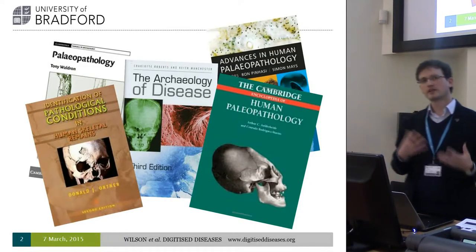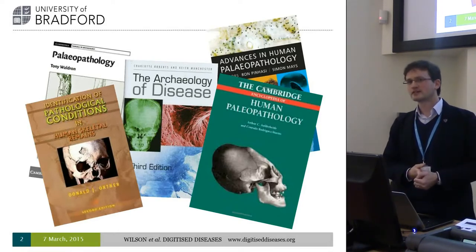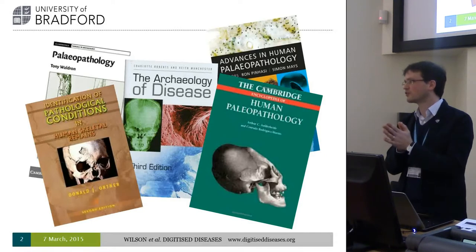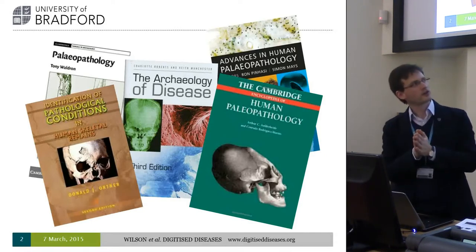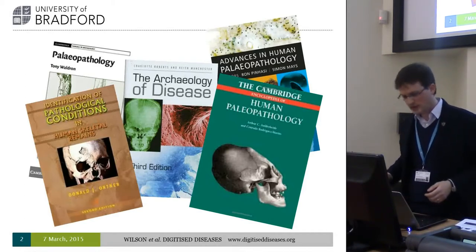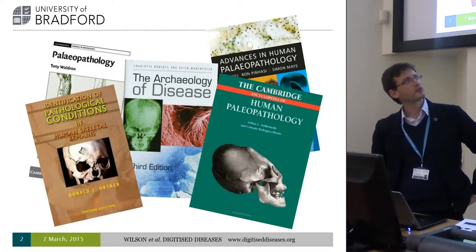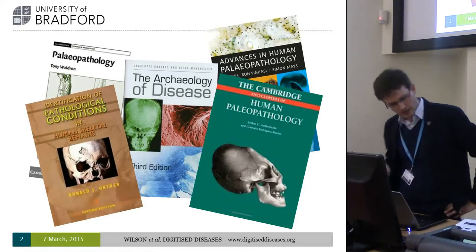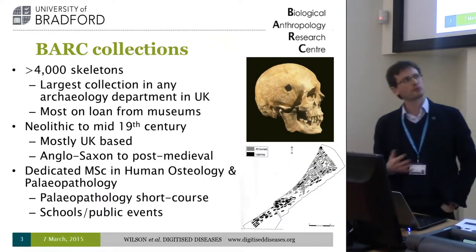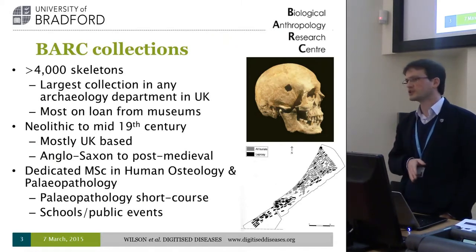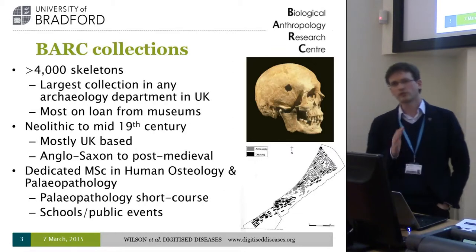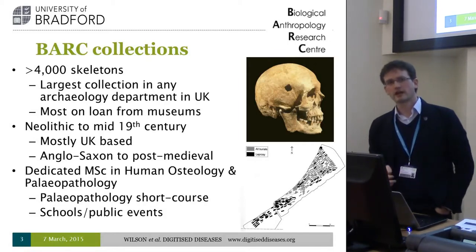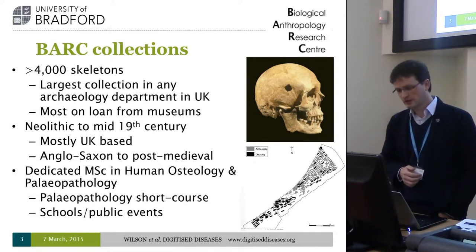The starting point for many in human osteology is actually the sort of textbook information, which is really presenting information at its best in a 2D format — colour photographs, black and white photographs, that are present in many of those important textbooks. Many of them have some form of connection here in Bradford. That picture on the front of Don Ortner's book I'll be coming back to in due course. Our collections are very extensive — probably the largest collection within a UK archaeology department of human skeletal material. We have more than 4,000 skeletons, most of them held on long-term loan, ranging in date from the Neolithic through to the mid-19th century.